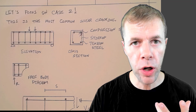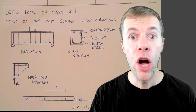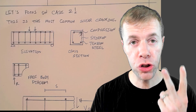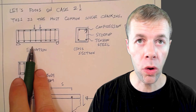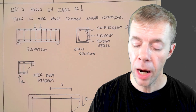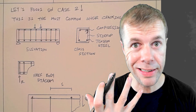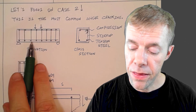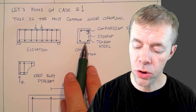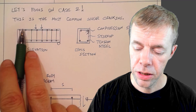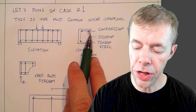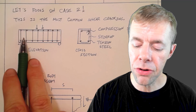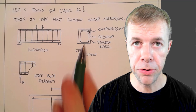In reinforced concrete beams for shear design, we typically focus on Case 2. This is what our structure would look like — I'm showing an elevation where you can see inside of it, almost like having x-ray vision. This is our tension steel, shown in cross-section. This is our compression steel at the top. And these little lines are our stirrups.